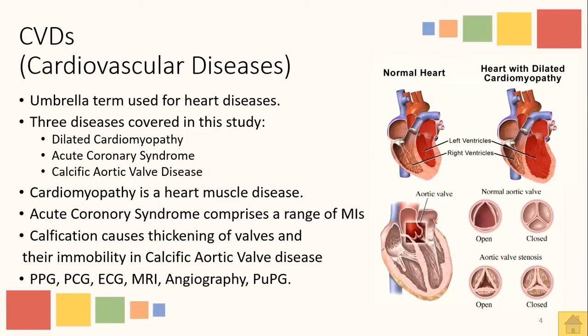Cardiomyopathy is a disease of heart muscles, and dilated cardiomyopathy is a dilation of heart muscles that causes difficulty in pumping. Acute coronary syndrome is a collective term used to describe various conditions that eventually lead to myocardial infarctions. Myocardial infarction or MI is a medical term used for heart attacks. Calcific aortic valve disease is a disease in which calcification causes thickening of aortic valves. A variety of techniques such as photoplethysmography, phonocardiography, ECG, MRI, and angiography are available for cardiovascular disease detection, but we opt for pulse plethysmography signals in this research study.